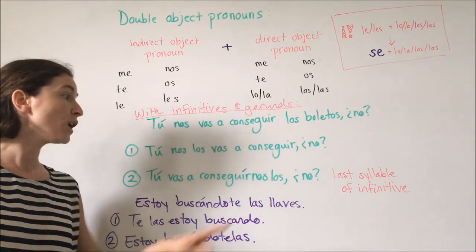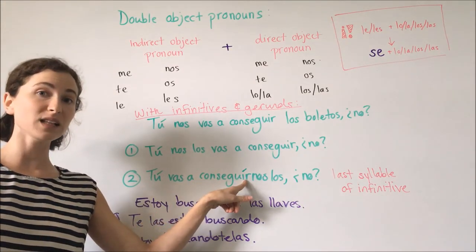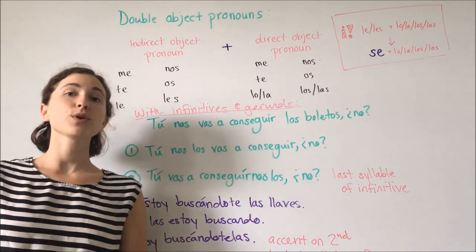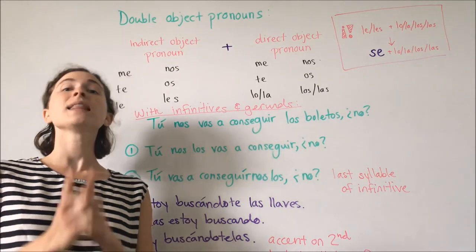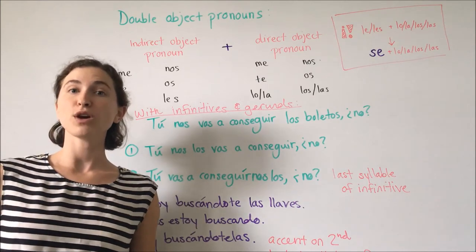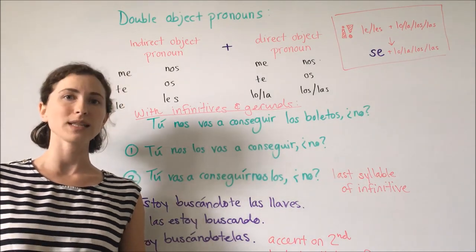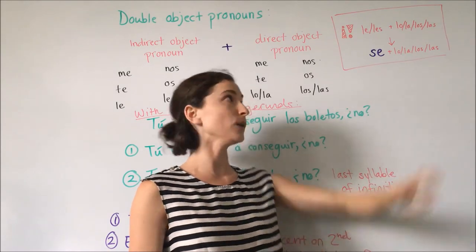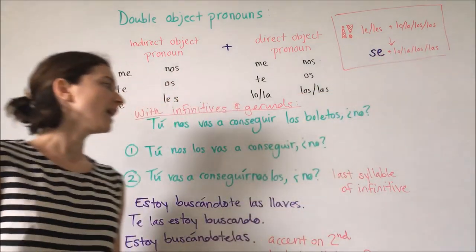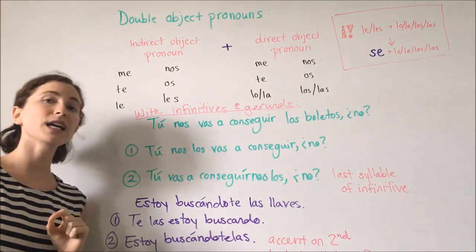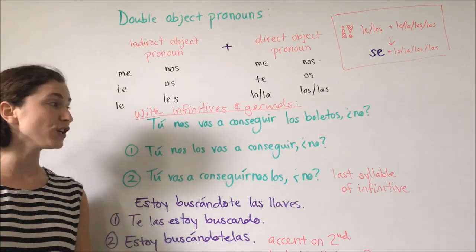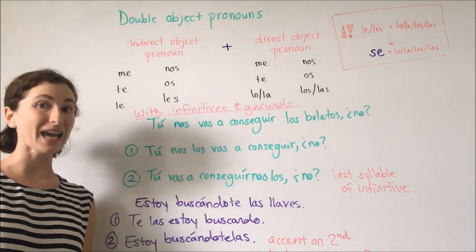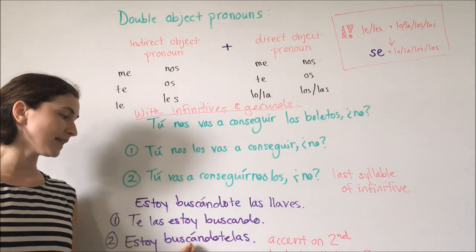The placement of the accent is different: with the infinitive it goes on the last syllable, and with the gerund it is the second to last syllable. To review: we can use indirect object and direct object pronouns together; the indirect object pronoun always precedes the direct object pronoun and they go together — we do not separate them. When using 'le' or 'les' with a third person direct object pronoun, this changes to 'se.' When attaching pronouns to an infinitive or gerund, we must add the appropriate accent.